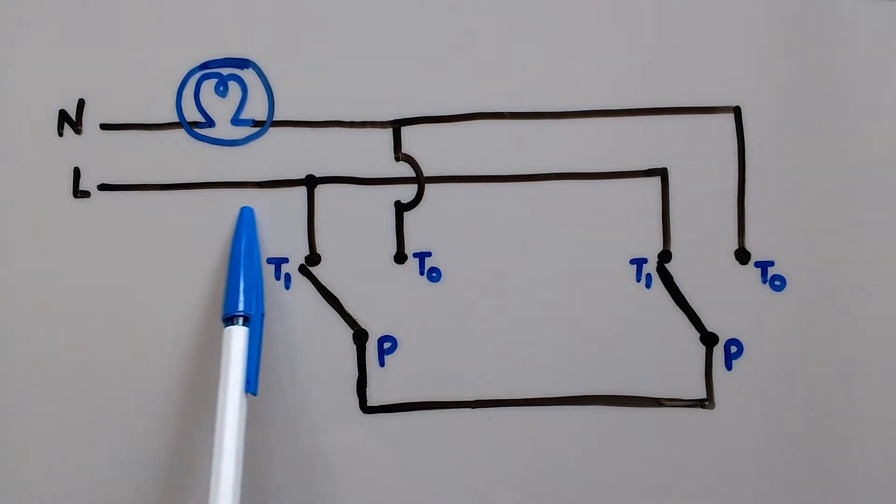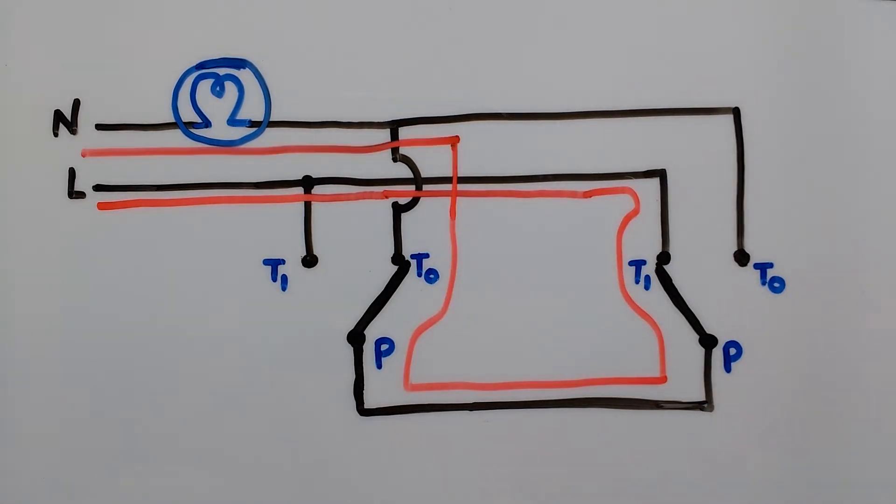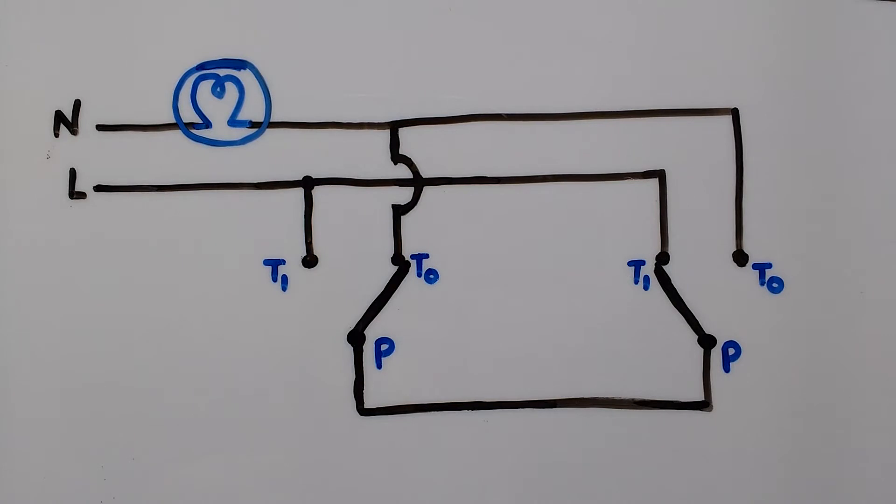Current configuration won't result in bulb turning on as we don't have a path from live to neutral. But if we toggle one of the switches we get a path from live to neutral, completing the circuit and turning the bulb on. Well, this was wiring part.